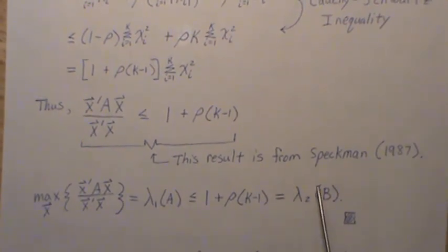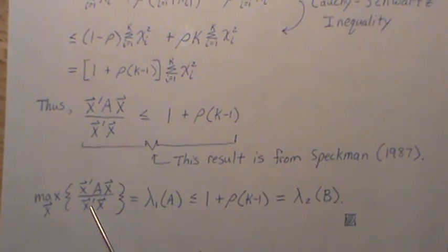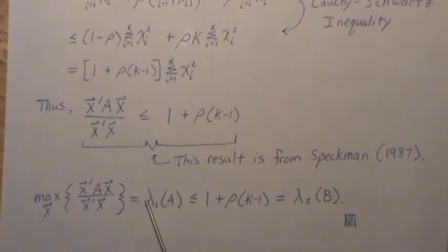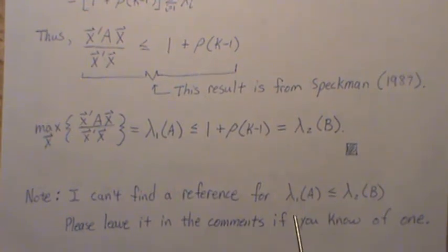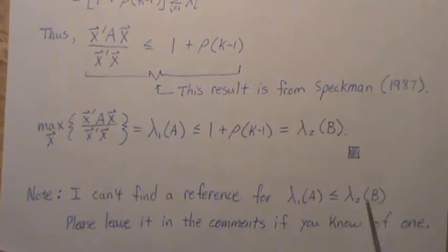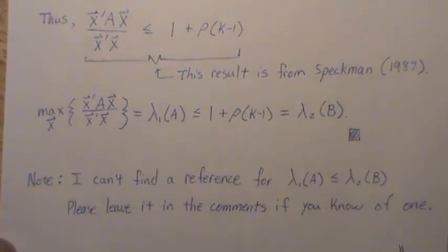Now, it's widely known that the largest eigenvalue of B is this, and of course the maximum eigenvalue of a correlation matrix is the largest eigenvalue. But this connection of these two matrices, I can't find a reference for, and I can't find a reference looking at the eigenvalue specifically. So please leave a comment if you know of a reference.